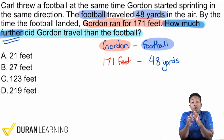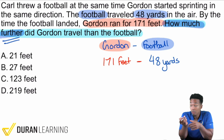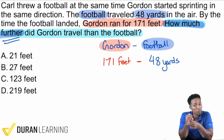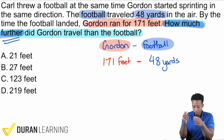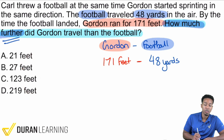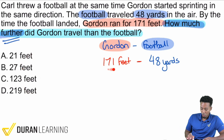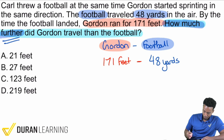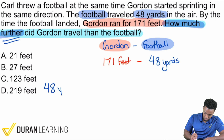Be very careful. We have to convert yards and feet to the same unit so we can do the subtraction correctly. Right now we can't subtract. If you subtracted and got 123 feet — sorry to say, that's the wrong answer. What we need to do is convert them to the same unit: feet. Gordon is already in feet; the football is not. So we need to take 48 yards and convert that into feet.